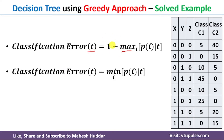The same equation can be written alternatively as the minimum of probability of i given t, where i is the number of classes. So either form of the equation can be used. In this particular numerical, I am going to use this particular equation.